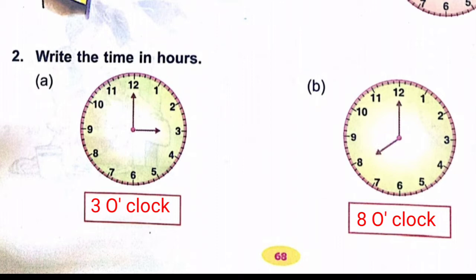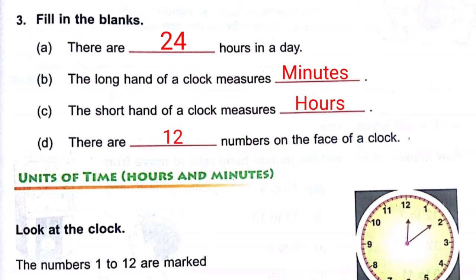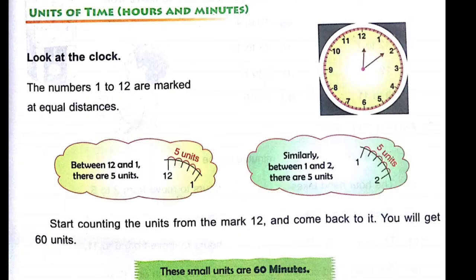Question number 3 — Fill in the blanks: (1) There are 24 hours in a day. (2) The long hand of a clock measures minutes and the short hand measures hours. (3) There are 12 numbers on a clock face, from 1 to 12, marked at equal distances.